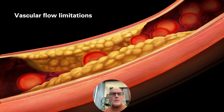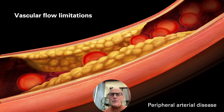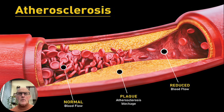Vascular flow limitations in the lower limb can occur for a range of different reasons, and one of them of course is peripheral arterial disease or atherosclerosis of the vascular structures in the lower limb. Here's a nice diagram of atherosclerosis — what it looks like on the inside — and as you can see, the vessel doesn't look quite as healthy as it used to, and we often see this in the older age groups of patients presenting with leg symptoms.